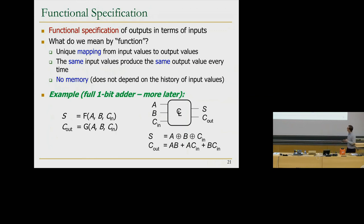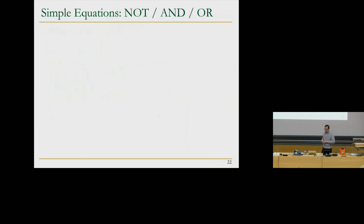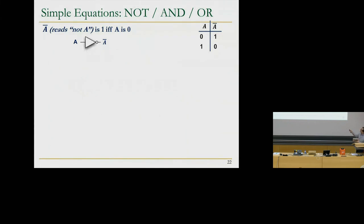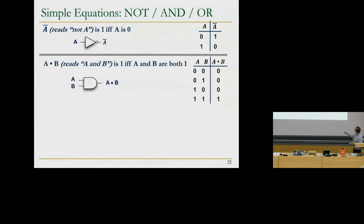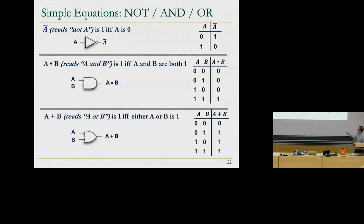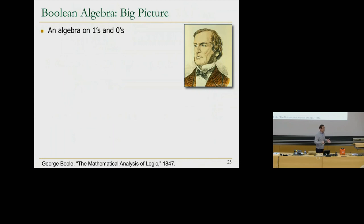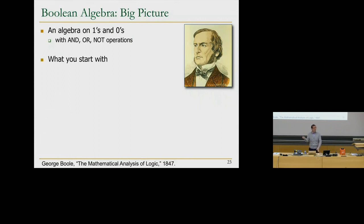There are simple functions — NOT is one of the simplest Boolean equations. Any Boolean equation can also be expressed as a truth table. This is A AND B; this is A OR B. Boolean algebra is an algebra that operates on ones and zeros, invented by George Boole. You can operate on ones and zeros using ANDs, ORs, NOTs, and more complicated things — but AND, OR, NOT are really the basic operations.